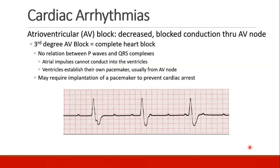Third degree AV block, also called complete heart block, occurs when there's no relationship between P waves and QRS complexes. The atrial impulses can't conduct all the way down to the ventricles, so the ventricles establish their own pacemaker — usually the AV node or something intrinsic in the ventricles. The P waves march out nice and regular, but there's no QRS following each P wave. We also have regular QRSs at a much slower rate, but they aren't preceded by a P wave — the P waves and QRSs are doing their own thing. The wide QRSs indicate conduction is occurring outside the His-Purkinje system. These patients often need a pacemaker to prevent cardiac arrest.